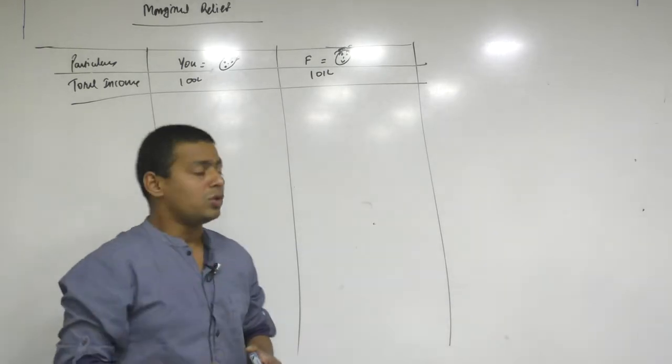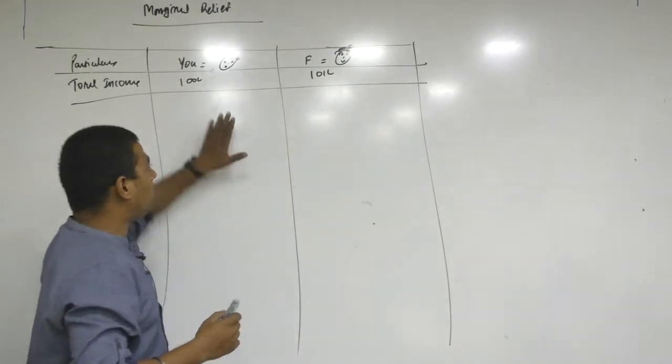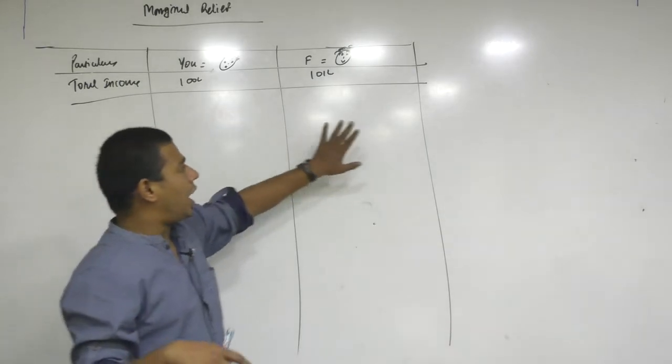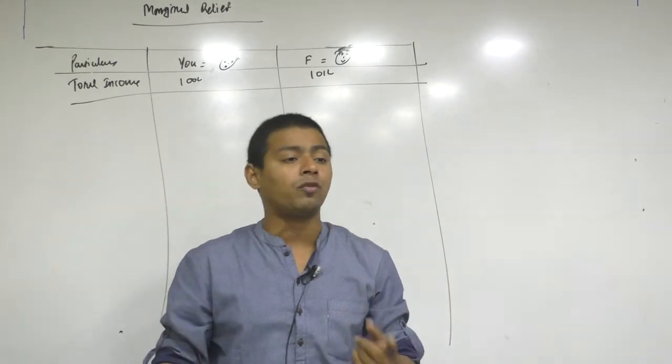Now you are earning 100 lakh rupees and your friend is earning 101 lakh rupees. So again he is earning 1 lakh more than you. But in this case both will pay surcharge. The specialty is that you will pay only 10% surcharge and he is going to pay 15% surcharge. So he is going to pay 5% more just because of 1 lakh.